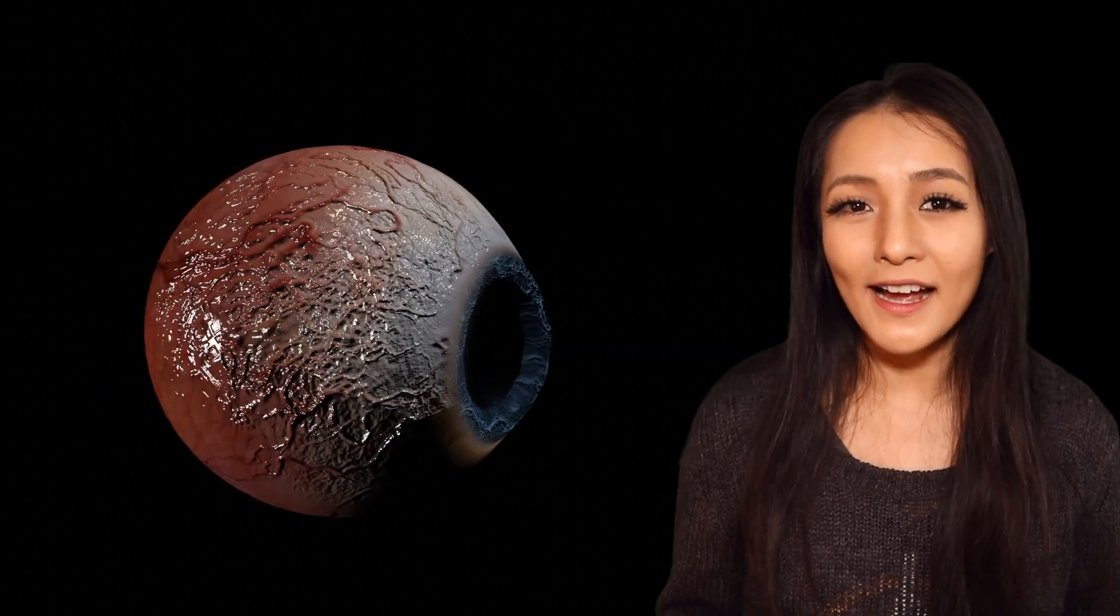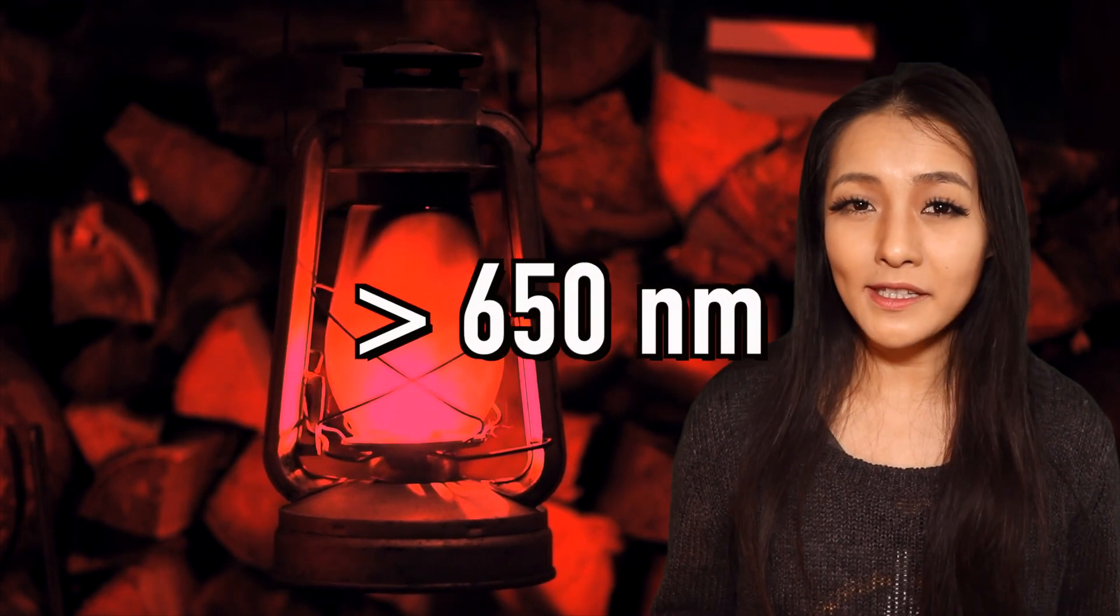So that's why astronomers get so angry when someone shines a white light in their eye, because they'll have to wait a long time to recover their dark adapted vision. Going from a dark to light adapted state happens very fast, in only a few seconds. But red light cannot bleach the dye in the rods if the wavelength is over 650 nanometres. So astronomers often use red lasers or lamps when they're observing.